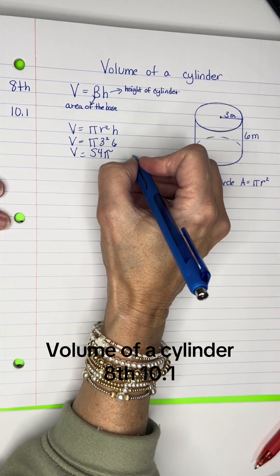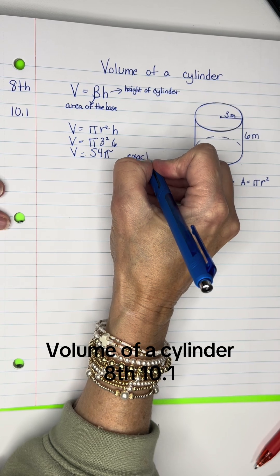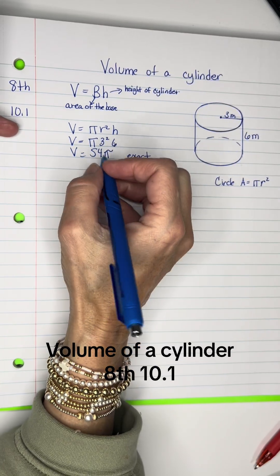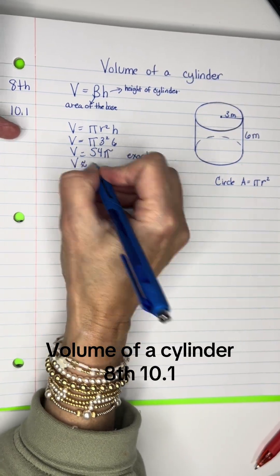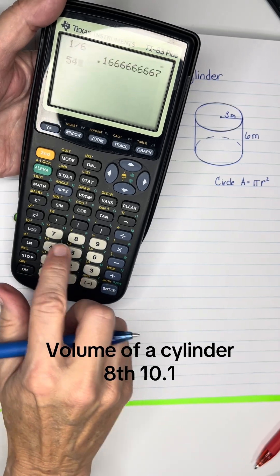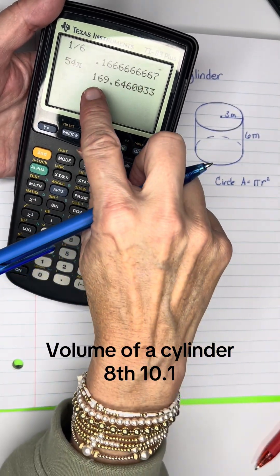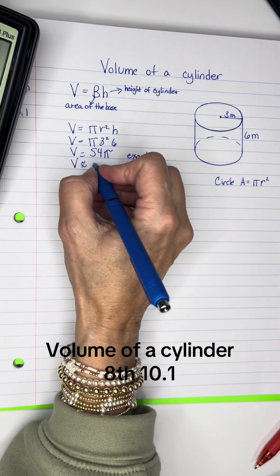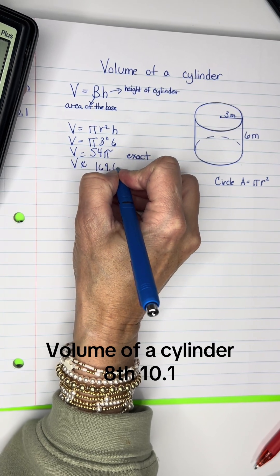Now that is the exact answer. And if I want to know what it is, round it off. Approximately, let's do 54, and then hit our pi button, and we get 169.6 rounded off to the nearest tenth.